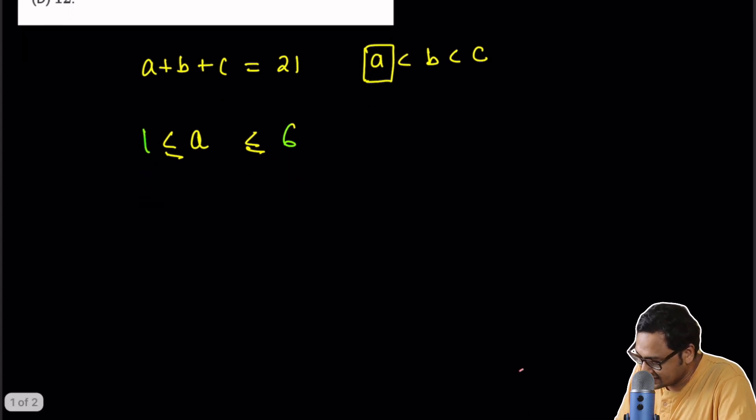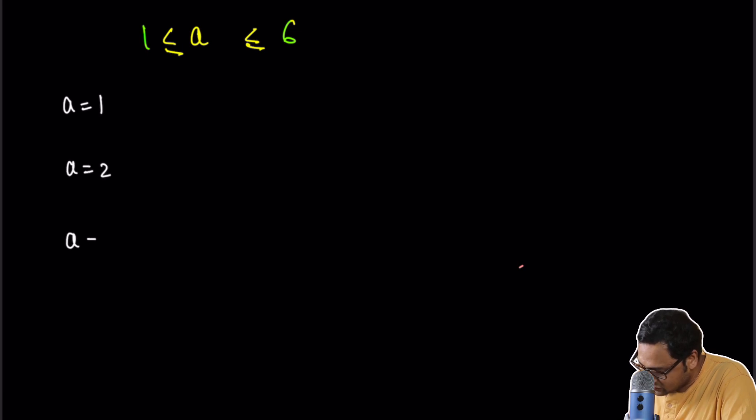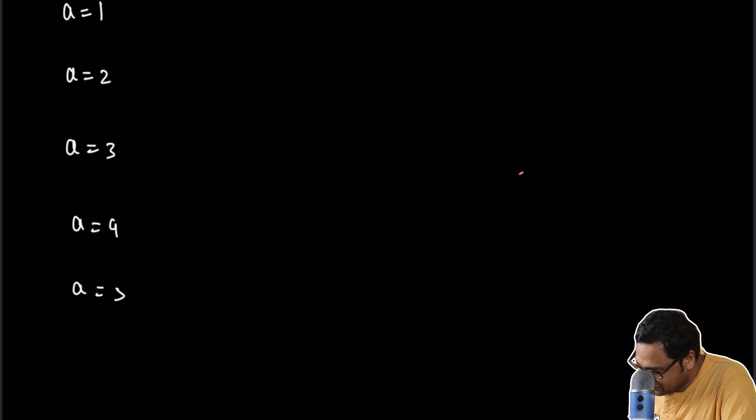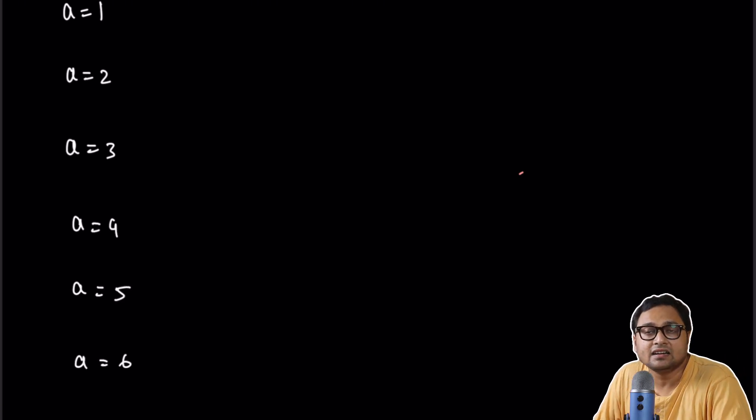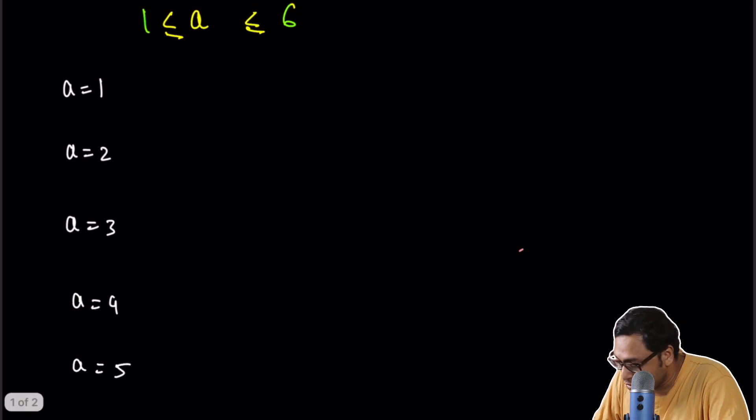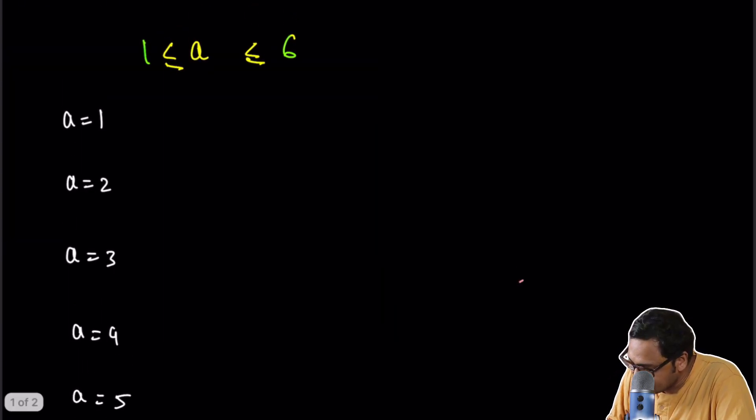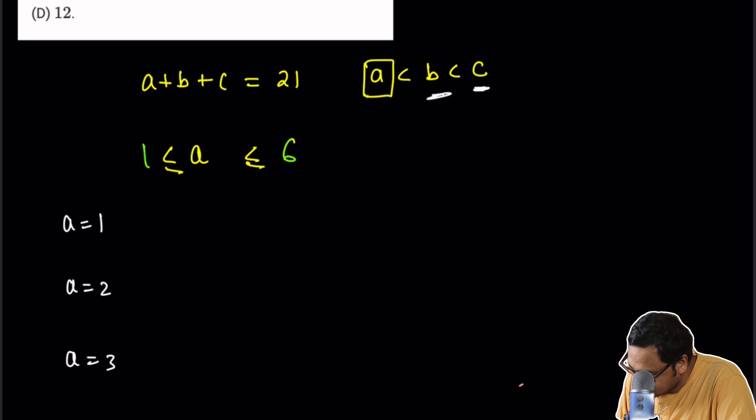So what are the 6 cases? The 6 cases are A equals 1, A equals 2, A equals 3, A equals 4, A equals 5, A equals 6. These are the 6 different cases. Okay, so how do we go about it? Well, let's look at C and B. What is C plus B then? If A is 1, C plus B is obviously 20,